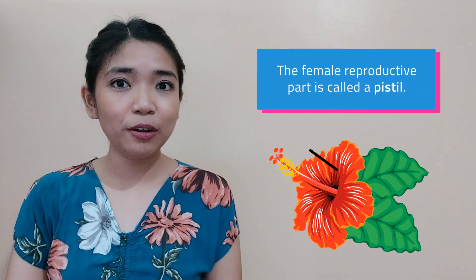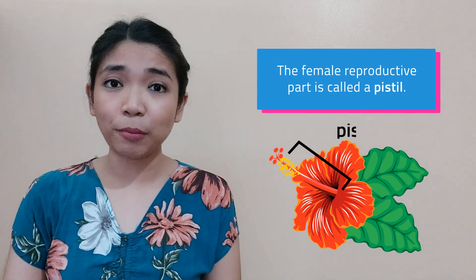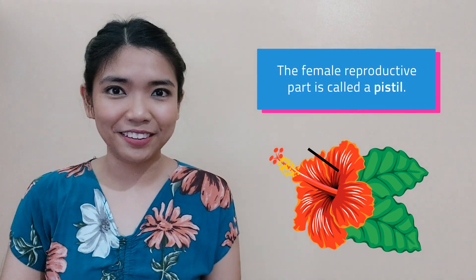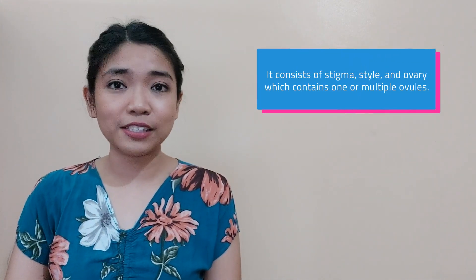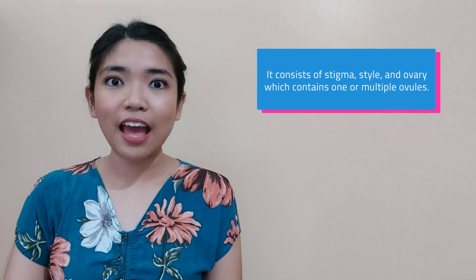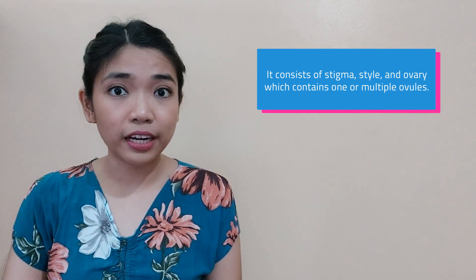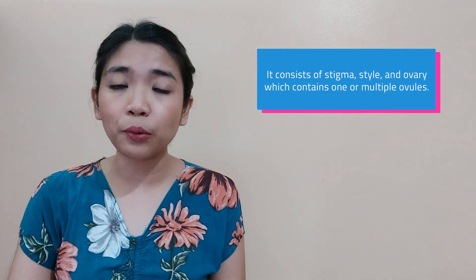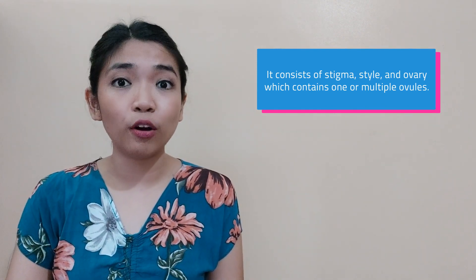The female reproductive part is called pistil. It consists of stigma, style, and ovary, which contains one or multiple ovules.